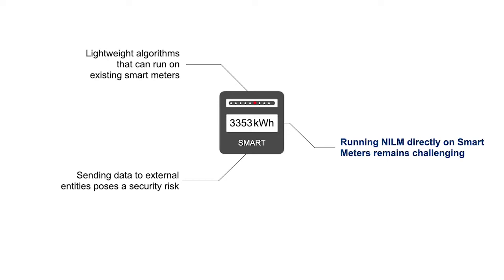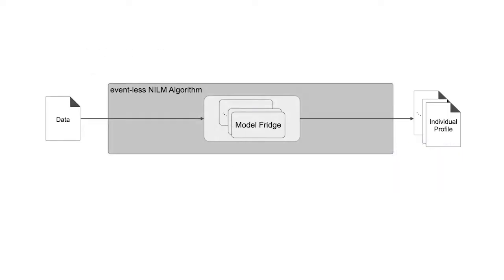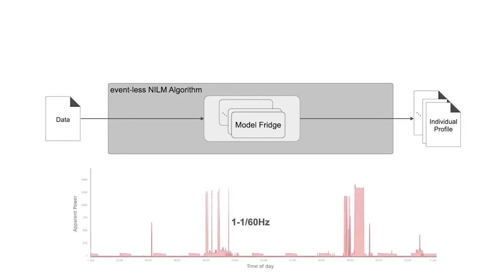There are basically two types of NILM algorithms. One are eventless algorithms that have a dedicated model for each appliance of interest. These models can be seen as a black box and directly convert the input data to a consumption profile for the particular appliance. Typical models are artificial neural networks or hidden Markov models, which are far from being computationally inexpensive. That's why they are typically only applied on a larger window of data, rather than for each new data point. Such windows may be up to a day of data sampled typically at 1 or 1 over 60 Hz.